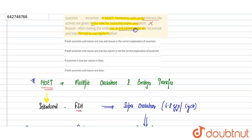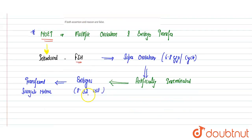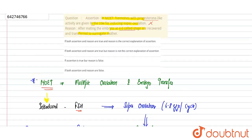After mating, embryos at four to six cell stage are recovered and transferred to surrogate mother - this is also incorrect. Embryos at eight to 32 cell stage are transferred. So both assertion and reason are false. Both are incorrect. Option D is correct. Hope you get it, thank you.